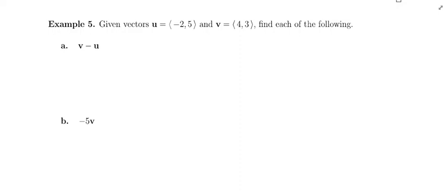Example 5. Given vectors u, which has components negative 2 and 5, and vector v, which has components 4 and 3, find each of the following. In part a, we need to find the new vector v minus u. You can do this geometrically by graphing it out, but the easiest thing to do is just do the algebra here.